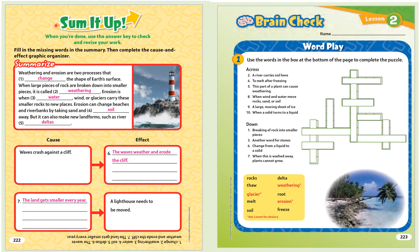Sum it up. When you're done, use the answer key to check and revise your work. Fill in the missing words in the summary, then complete the cause and effect graphic organizer. Summarize: Weathering and erosion are two processes that 1. [blank] the shape of Earth's surface. When large pieces of rock are broken down into smaller pieces, it is called 2. [blank]. Erosion is when 3. [blank] — wind or glaciers carry these smaller rocks to new places. Erosion can change beaches and riverbanks by taking sand and 4. [blank] away. But it can also make new landforms such as river 5. [blank]. Cause: Waves crash against a cliff. Effect: 6. [blank]. Cause: 7. [blank]. Effect: A lighthouse needs to be moved.